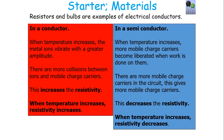To clarify and summarise: in a conductor, when the temperature increases, the metal ions vibrate with a greater amplitude, so there are more collisions between the mobile charge carriers and ions, which increases the resistivity. But for a semiconductor, when the temperature increases, more mobile charge carriers become liberated, increasing conductivity and decreasing resistivity. In today's lesson, we have looked at what a semiconductor and conductor are, and how their resistivities change dependent on temperature and light intensity. Thank you very much, and take care.